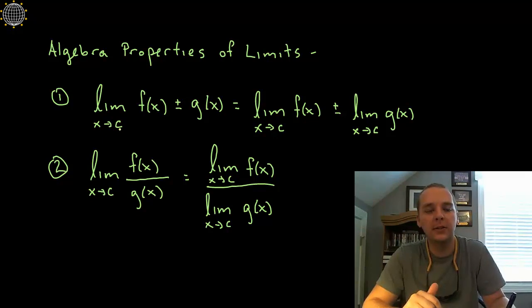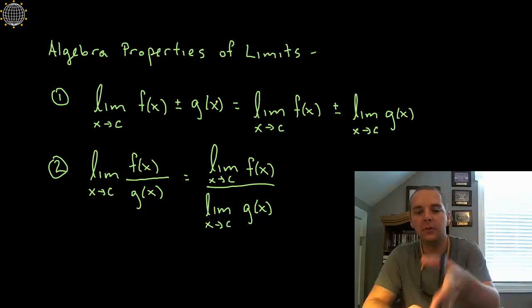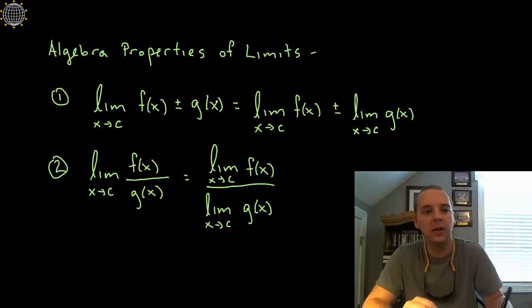The limit as x goes to c of the sum or difference of two expressions or two functions says that you can take the limit of the first term plus or minus the limit of the second term. So in short, limits split or break over addition. This is great for polynomials where you might have three or four or five terms. There's nothing special you have to do other than take the limit of each individual term and then add those results together.